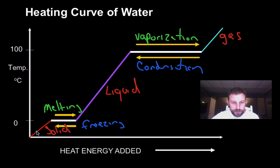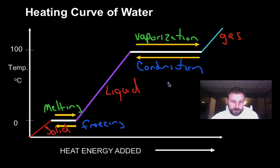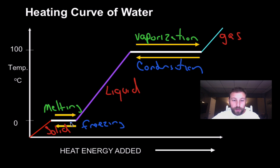Only where we see an increase in temperature — right there and there and there — those are going to be the phases. Right here, as we go from solid to a liquid during either the melting or freezing stage, there's no change in temperature, and there may be water and ice existing in the same system. Just like here, we're going to have liquid and gas existing during the same system.